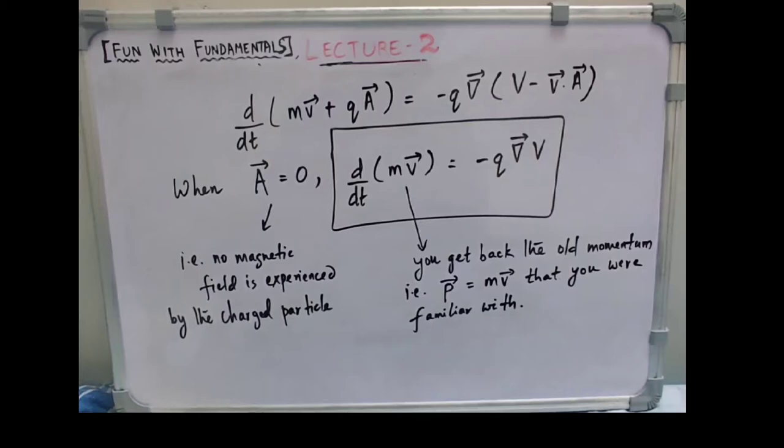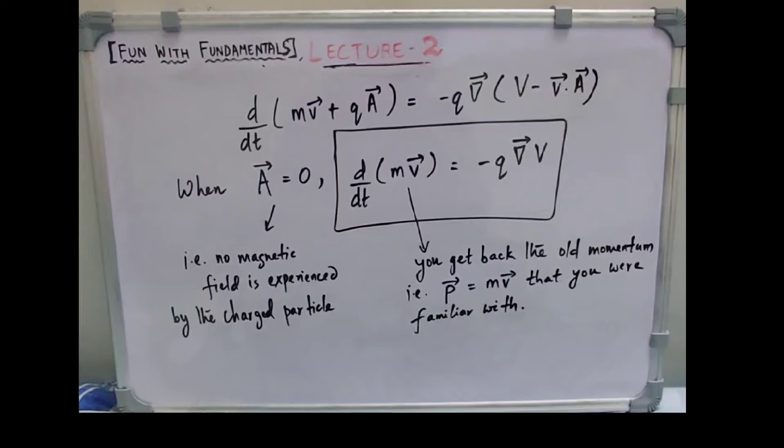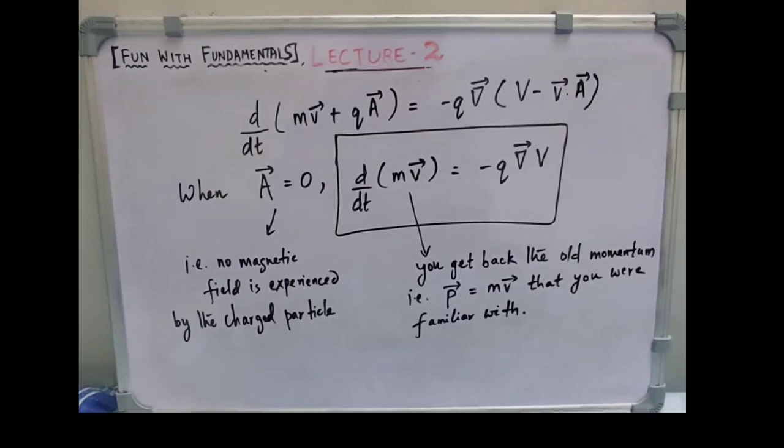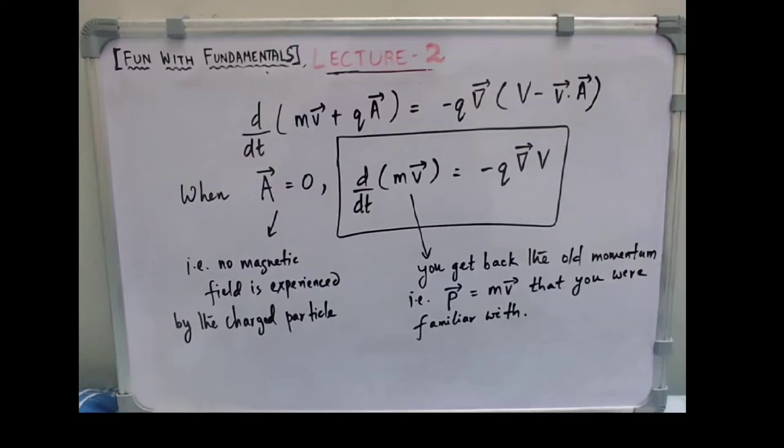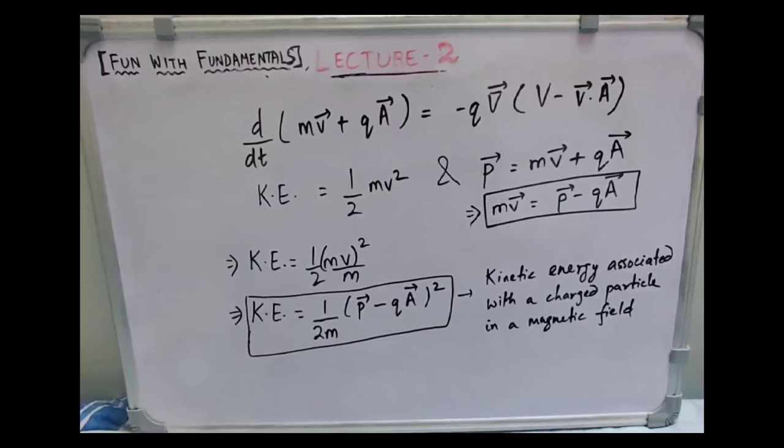Suppose there is no external magnetic field experienced by the charged particle — that is, A vector equals zero. Substituting this value of A into the equation, we get d/dt of mv equals minus q gradient of V. This is the familiar old equation, and we recover the old momentum p equals m times v.